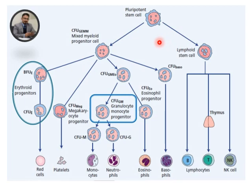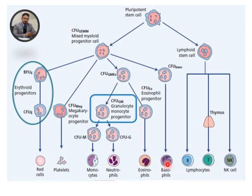While learning hematopoiesis, leukopoiesis, erythropoiesis, or thrombocytopoiesis, we cannot ignore this picture because it is very basic. Here we have a pluripotent stem cell. As discussed earlier in erythropoiesis, erythrocytes are developed through erythropoiesis, and here we have platelets. Now we have five types of cells: granulocytes and agranulocytes. Granulocytes are cells which have granules.